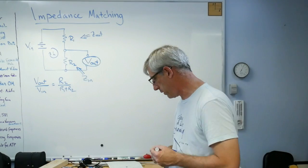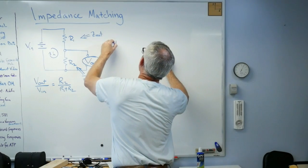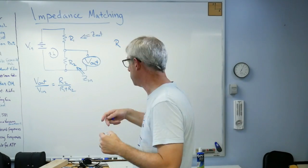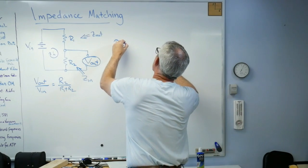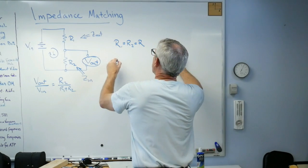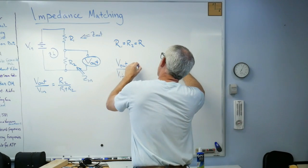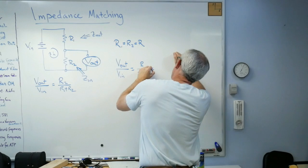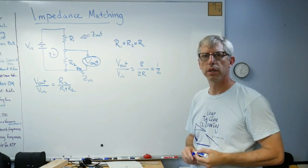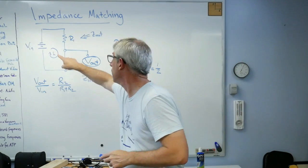So here's why we care. Let's say Z_out and Z_in are the same. Well if I'm going to transfer from Z back to R okay so we can work in the DC world, let's see R1 equals R2 equals R, well V_out over V_in equals R over 2R equals one half.